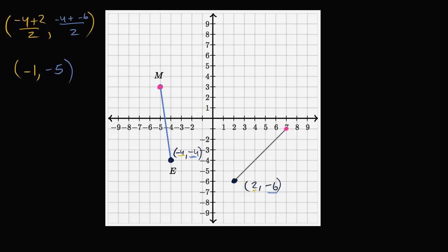So let me plot that. This point at negative one, negative five — x is negative one, y is negative five — is right over here. And it does indeed look like the midpoint; it looks like it's equidistant between E and this point over here. So this should sit on the line of reflection.